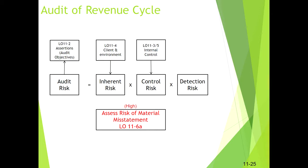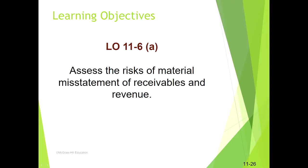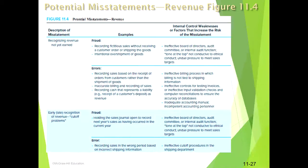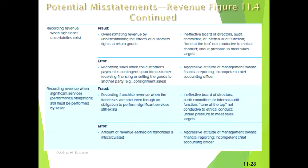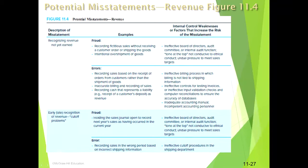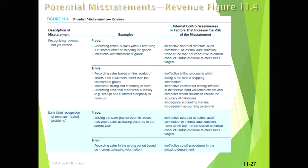The first piece is really the assessment of the risk of material misstatement. We can think about different possible misstatements — for example, recognizing revenue the company hasn't earned. The fraudulent version of this is recording fake sales, while the error version is based on incorrect timing of entries, such as recording sales based on receipt of orders rather than shipment.